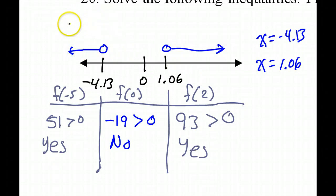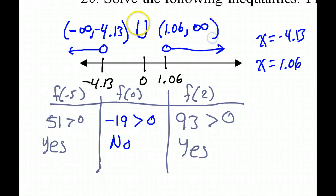We just need to finish it off with some interval notation. So for this branch, that's negative infinity to negative 4.13. Okay, and we'll use round parentheses because it's an open circle. We're not including the end point because that's where it's equal to 0, not greater than. And for this branch, we have 1.06 to infinity. And don't forget your union symbol between them when you have more than one interval as part of your solution set.